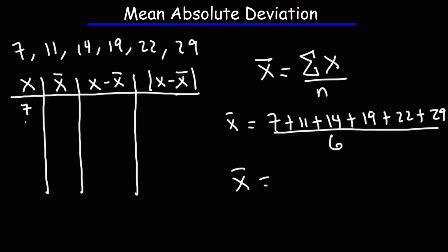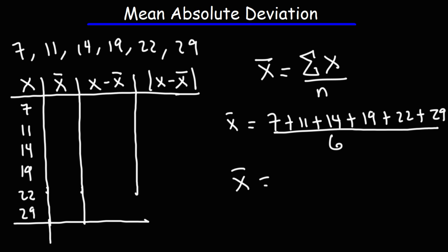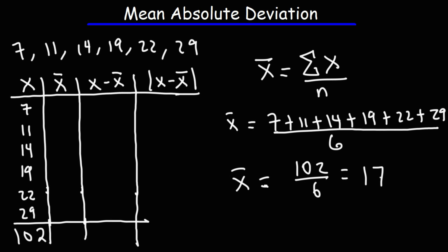So we have 7, 11, 14, 19, 22, and 29. The sum of 7 plus 11 plus 14 plus 19 plus 22 plus 29 gives us 102. And 102 divided by 6 gives us the arithmetic mean, which is 17.